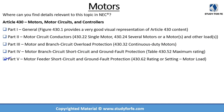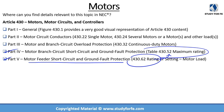Part 5 of Article 430 is titled Motor Feeder, Short Circuit and Ground Fault Protection. The section I would like you to go through in detail is 430.62, which covers the rating or setting of a motor load, and it cross-references 430.52. I am going to go through a couple of examples on Motor Branch Circuit, Short Circuit and Ground Fault Protection as well as Motor Feeder, Short Circuit and Ground Fault Protection, to explain how we size OCPDs for both feeder and branch circuits.